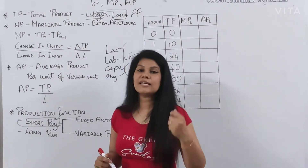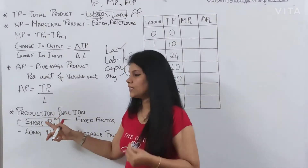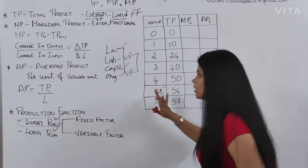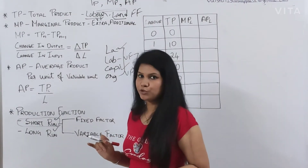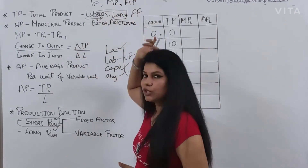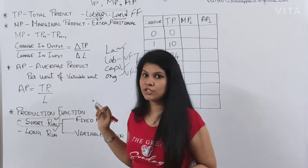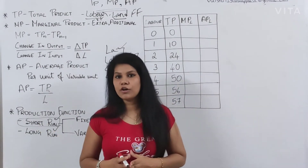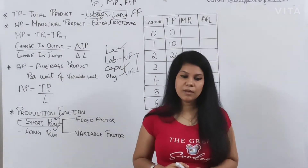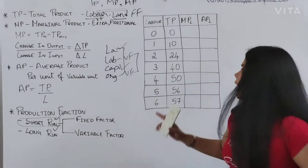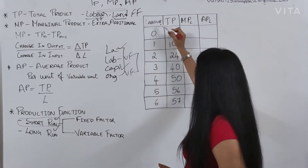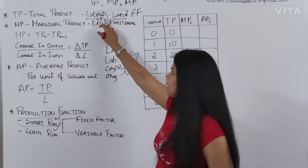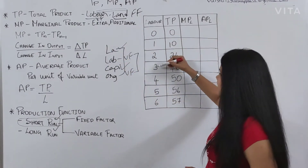For the short run we have the law of variable proportions, and for the long run we have returns to scale. The question asked how TP, MP, and AP are going to behave — these are all concepts of the short run. Now let me help you find out how to calculate these. The labour numbers are 0, 1, 2, 3, 4, 5, and 6. Labour is a variable factor and it is continuously increasing.